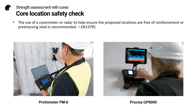Another way in which NDT is used for the core assessment is to check the location of the cores for the presence of steel, which would make the test results invalid. EN 13791 recommends the use of a cover meter or a ground penetrating radar for this purpose.